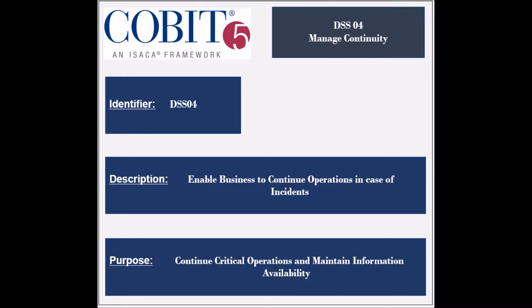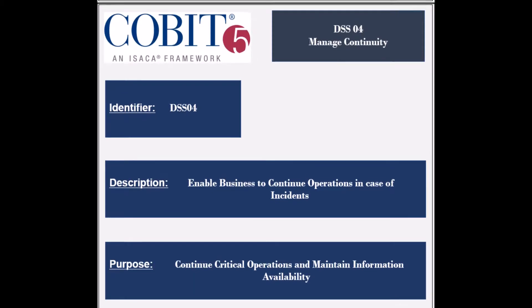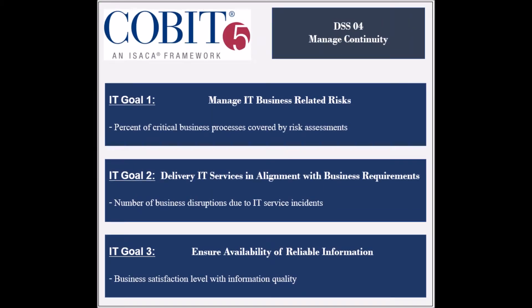The purpose of this process is to continue the business operations and ensure the information availability in case of a significant event. The process supports the achievement of three IT-related goals. The first goal is to manage the IT-related business risk, and its achievement is measured by the percent of critical business processes covered by risk assessments, and by the frequency of update of the risk profile.